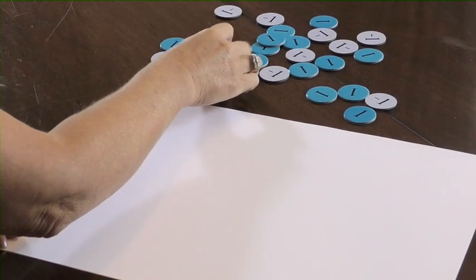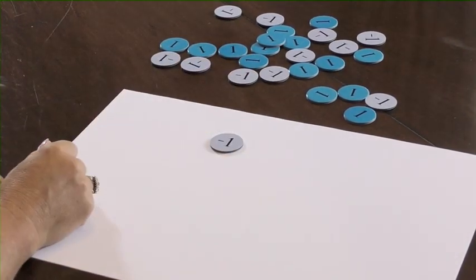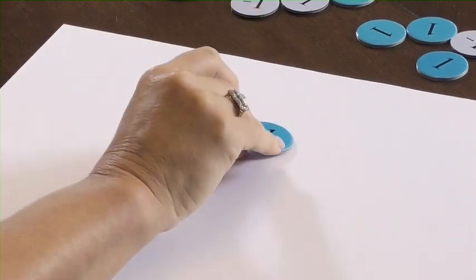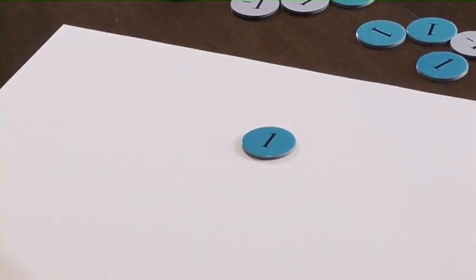Each one of the disks has got two sides. We've got negative one on one side and one on the other.